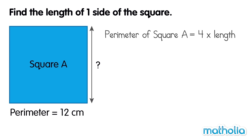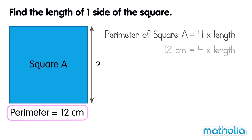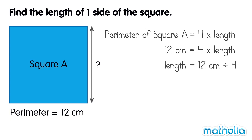We know the perimeter of square A is 12 cm. So we can write 12 cm equals 4 times length. To find the value of one side length, we divide 12 cm by 4. 12 cm divided by 4 equals 3 cm. So the length of one side of the square is 3 cm.